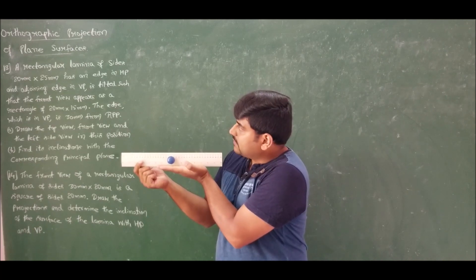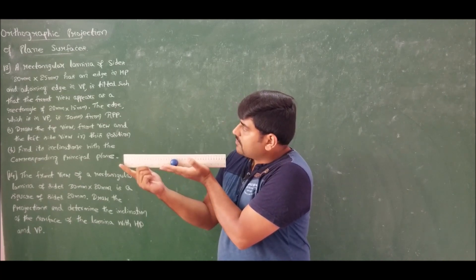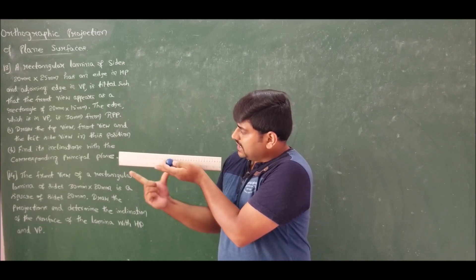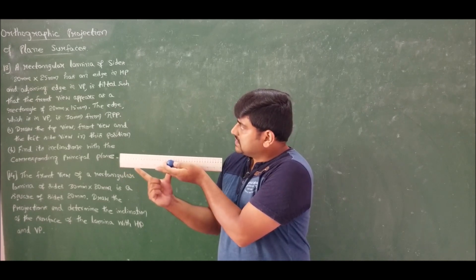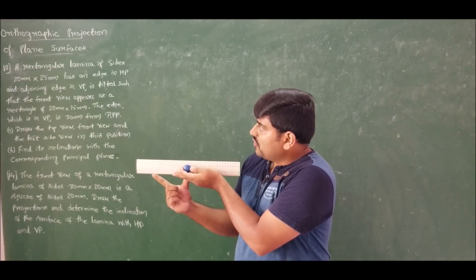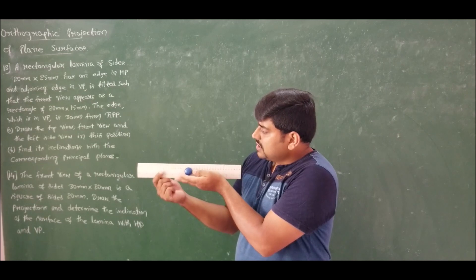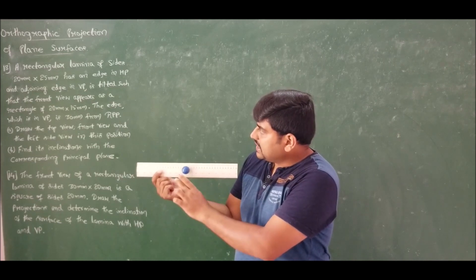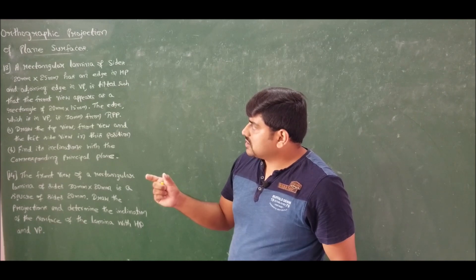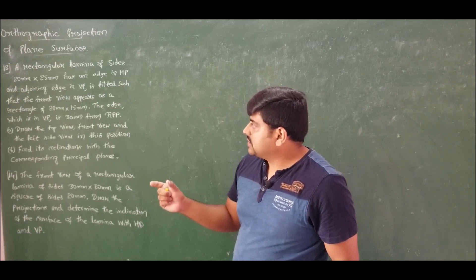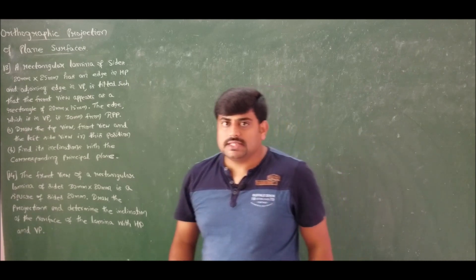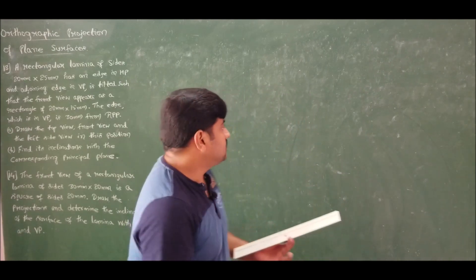In the front view, I can observe the rectangle of 20 mm × 25 mm, with an edge in HP and the adjoining edge in VP. Once the lamina is tilted, it appears as a reduced rectangle of 20 mm × 15 mm. We need to draw the front, top, and left side view in this position. Let us solve this problem.